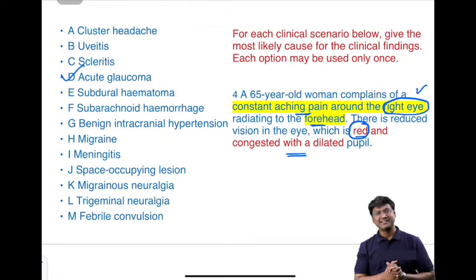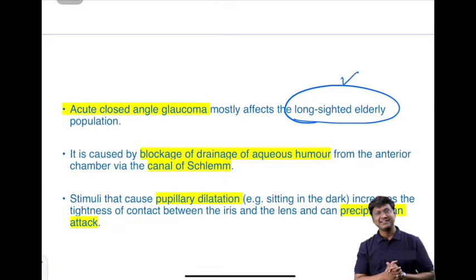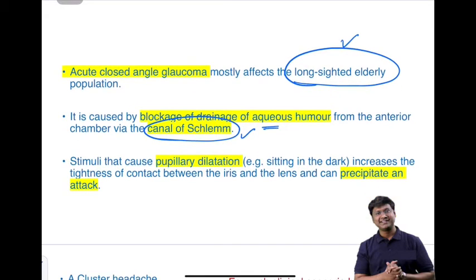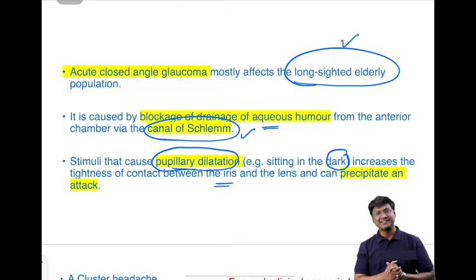Acute closed-angle glaucoma most commonly affects long-sighted elderly individuals. There is blockage of drainage of aqueous humor from the anterior chamber via the canal of Schlemm. The attack is precipitated by pupillary dilatation, such as when the individual is in a dark area, increasing contact between the iris and lens. Features include headache, pain in the eye radiating to the forehead, and a red, congested eye with a dilated pupil.